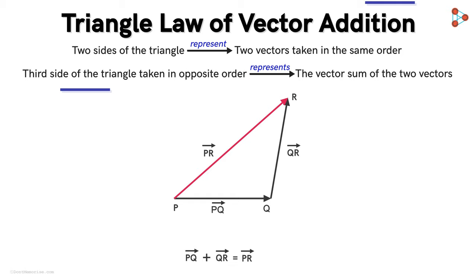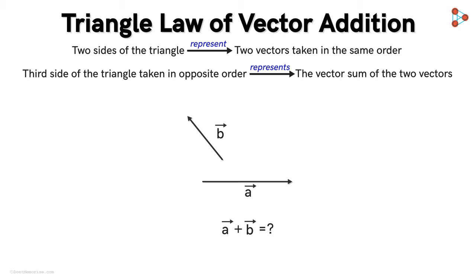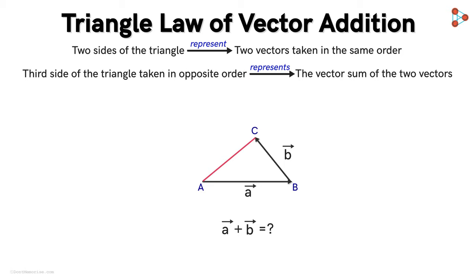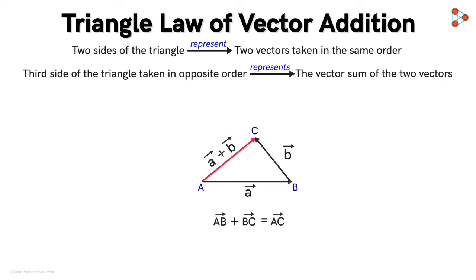This is known as the triangle law of vector addition. Take a moment and have a look at this. Now by applying this law, we can add any two vectors. Suppose we have to add vectors A and B. First, we need to position the two vectors such that the initial point of one vector coincides with the terminal point of the other. So we move vector B parallel to its position without changing its magnitude and direction, and place it such that the initial point of vector B coincides with the terminal point of vector A. Now notice that these three points A, B, and C form a triangle. So according to the triangle law of vector addition, the vector sum of these two vectors will be the third side of the triangle ABC, such that its initial point coincides with that of vector A and its terminal point coincides with that of vector B. So in this way, by applying the triangle law of vector addition, we can find the vector sum of two vectors.